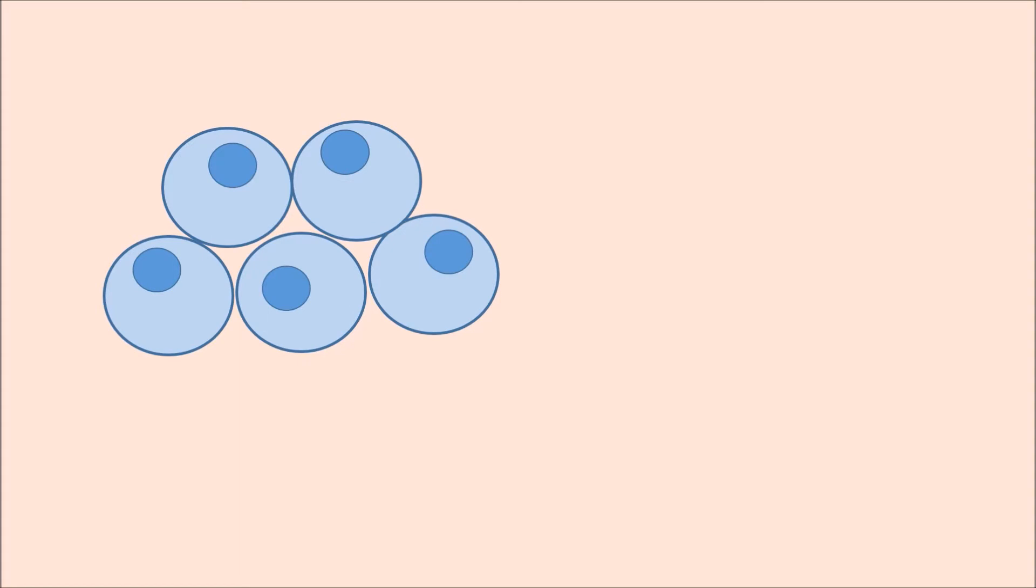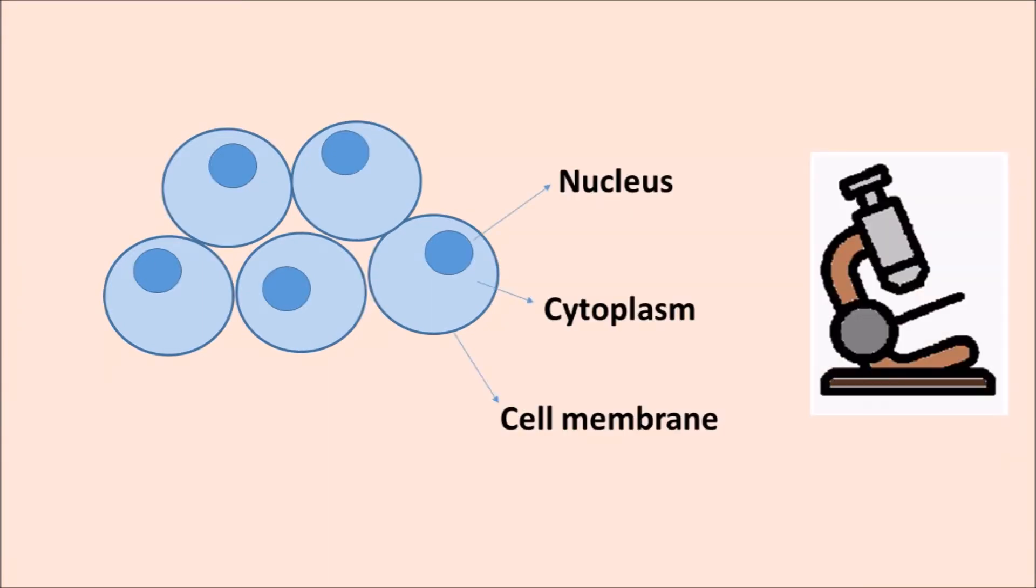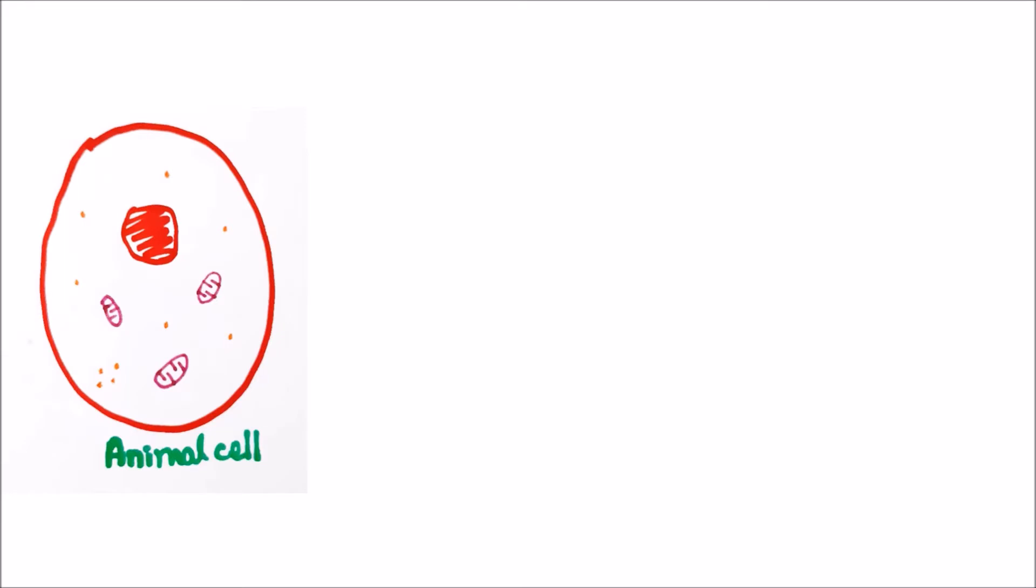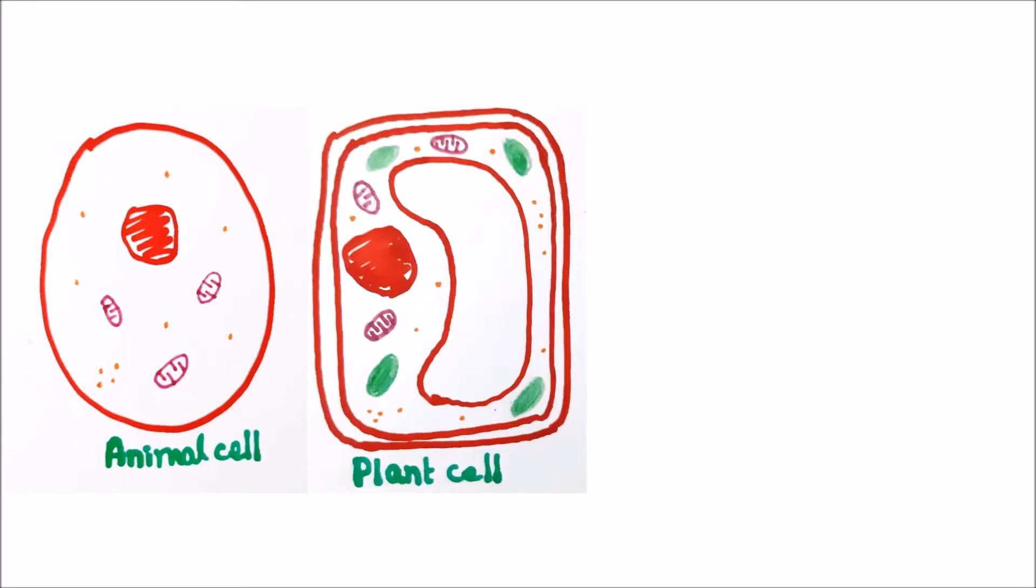Cells are like building blocks of living things. They are very tiny and you'll need a microscope to see them. With a simple microscope, you can see the cell membrane, nucleus, and cytoplasm only. We'll look into three different types of cells: an animal cell, a plant cell, and a bacterial cell.